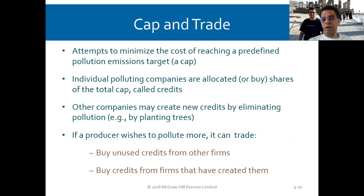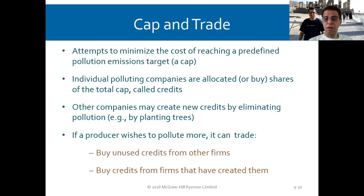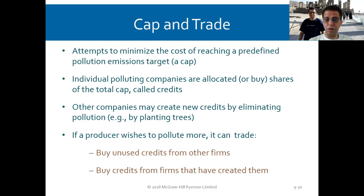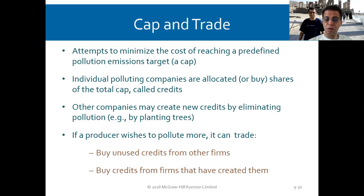Cap and trade attempts to minimize the cost of reaching a predefined pollution emission target — a cap. This system is being discussed between the European Union, the USA, and Canada. Individual polluting companies are allocated shares of the total cap called credits. Other companies may create new credits by eliminating pollution, such as planting trees. If a producer wishes to pollute more, it can buy unused credits from other firms or from those that have created them.